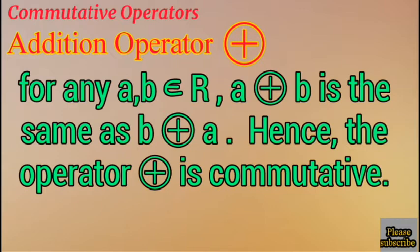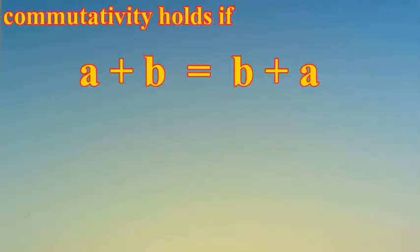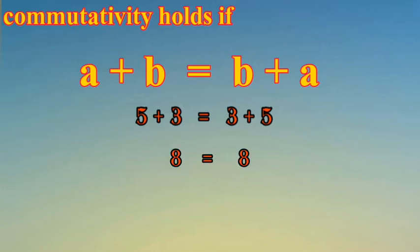Let's use some particular numbers to prove commutativity. Commutativity holds if A plus B is equal to B plus A. We can use two numbers like 5 and 3. We see here that 8 is equal to 8. So that proves the commutativity of addition.